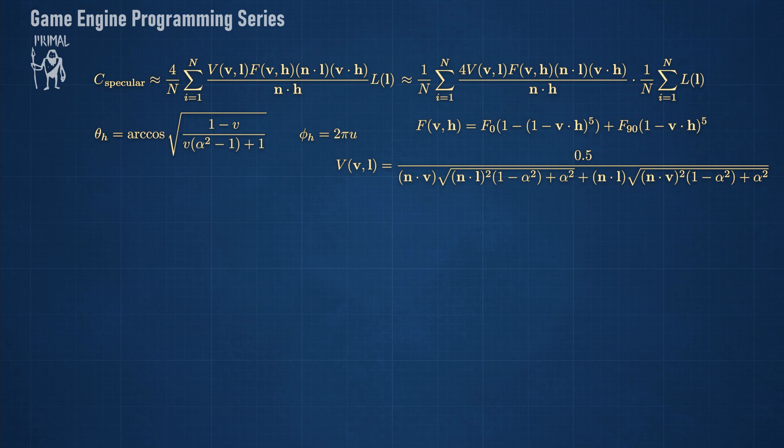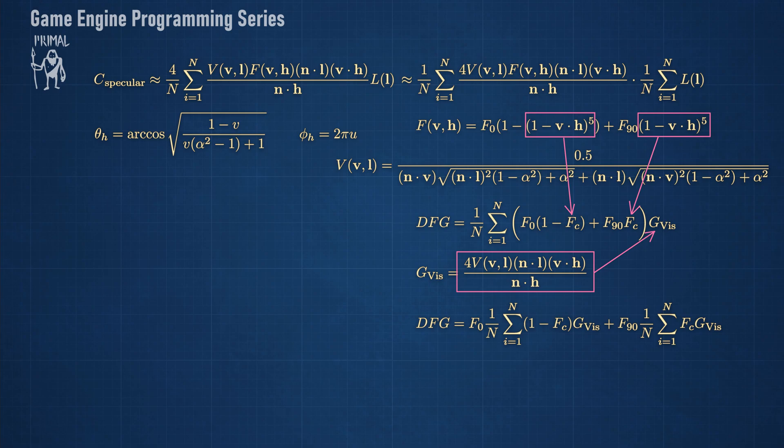Combining some terms in separate variables, we can rewrite this sum like so. In the literature, it's often called the DFG sum. Recall from the PBR episode that F0 is the specular color of the material and F90 is the specular color at grazing angle.